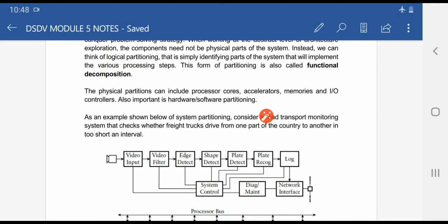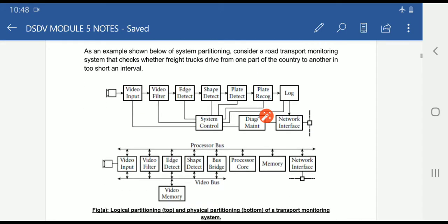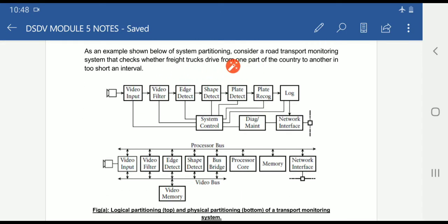Now we will take an example to discuss how physical partitioning and logical partitioning are different and what is the importance of logical partitioning to reduce the final cost of the product. We have taken one example of a road transport monitoring system which checks whether trucks drive from one part of the country to another in too short an interval.